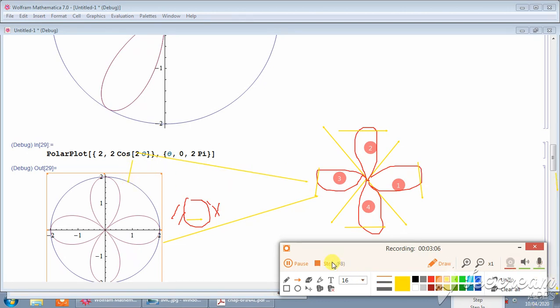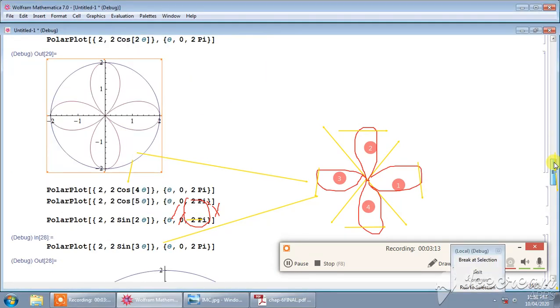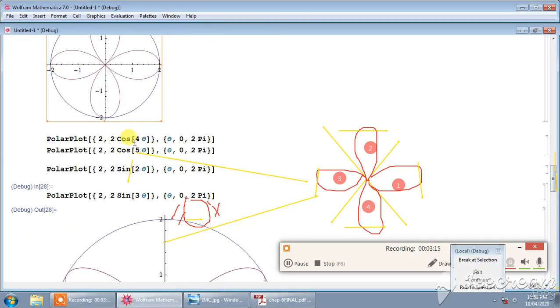I hope you understood. In similar way, you can draw r is equal to 4 cos theta. So you will find that symmetry is about the initial line. There are eight loops, so only four values are required.